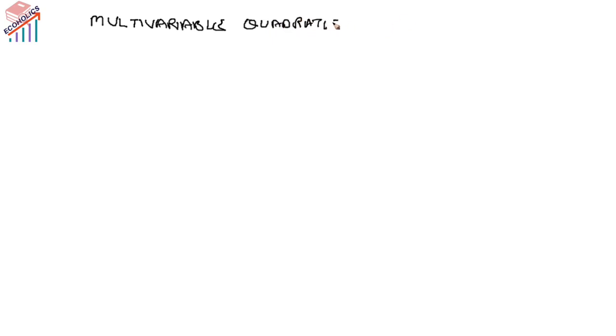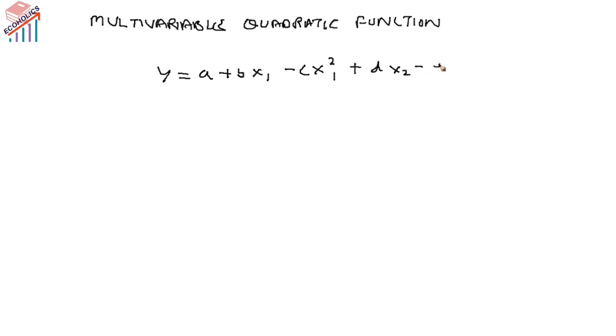Now, the multivariate quadratic function means that y is dependent on more than one variable. We write it as: y = bx1 − cx1² + dx2 − ex2². This is a three-dimensional equation, and under three dimensions it is not possible to show this equation on a standard graph.